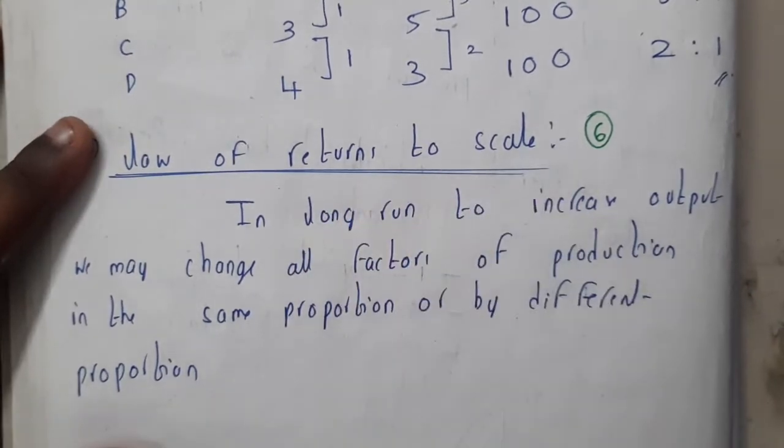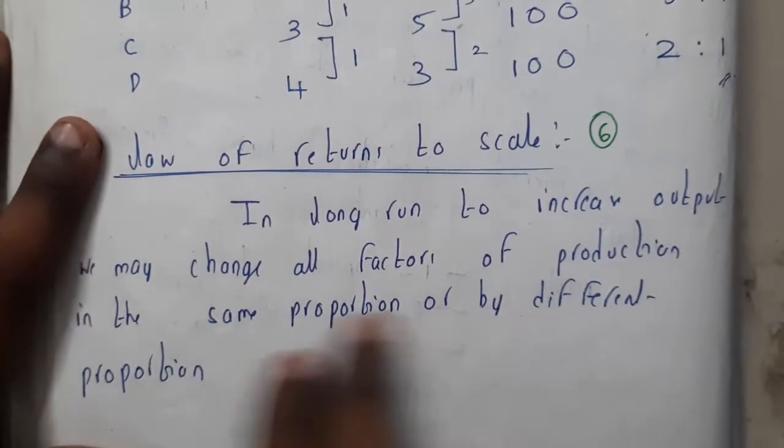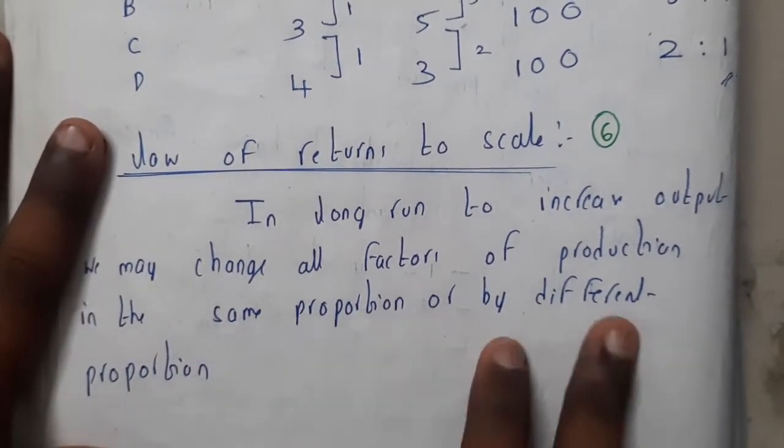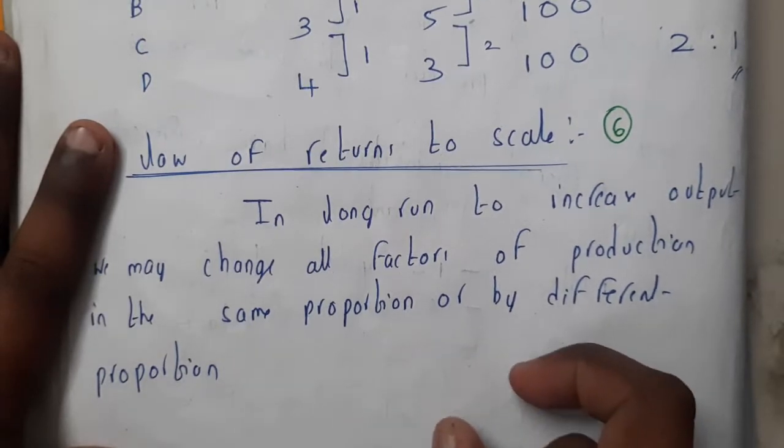In the long term, to increase output we may change all factors of production in the same proportion or by different proportions. If you increase capital by two, you will be increasing your labor by two. Let us again consider labor and capital.